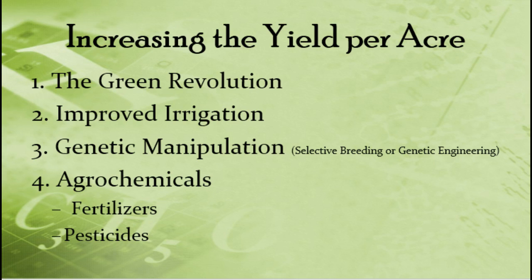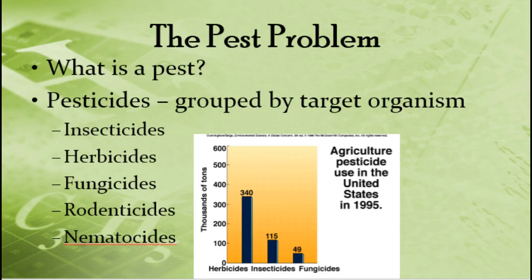Later in this unit, we're going to talk about how they can actually genetically manipulate different crops, either through selective breeding or genetic engineering, in order to increase yield. And then the last way to do it is with the use of agrochemicals, which would either include fertilizers — which we've talked a lot about already with water quality — or pesticides, which we're going to talk about today.